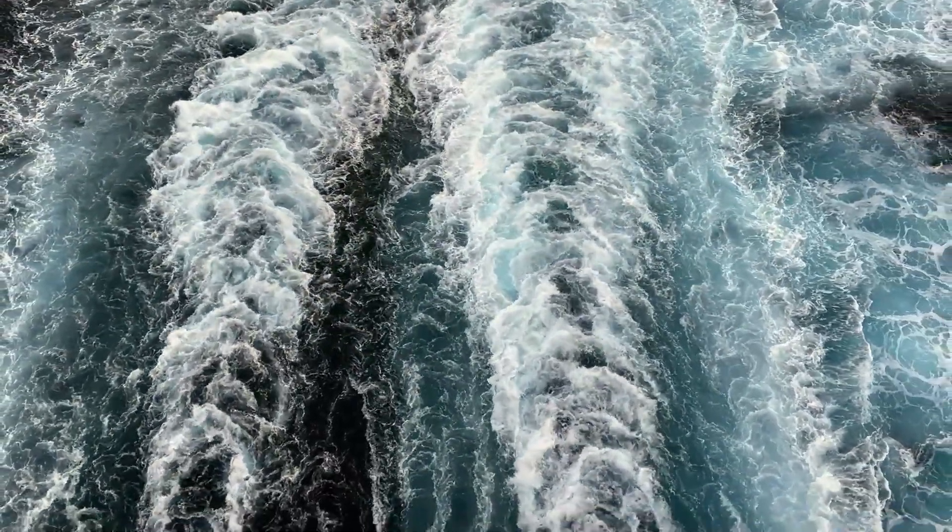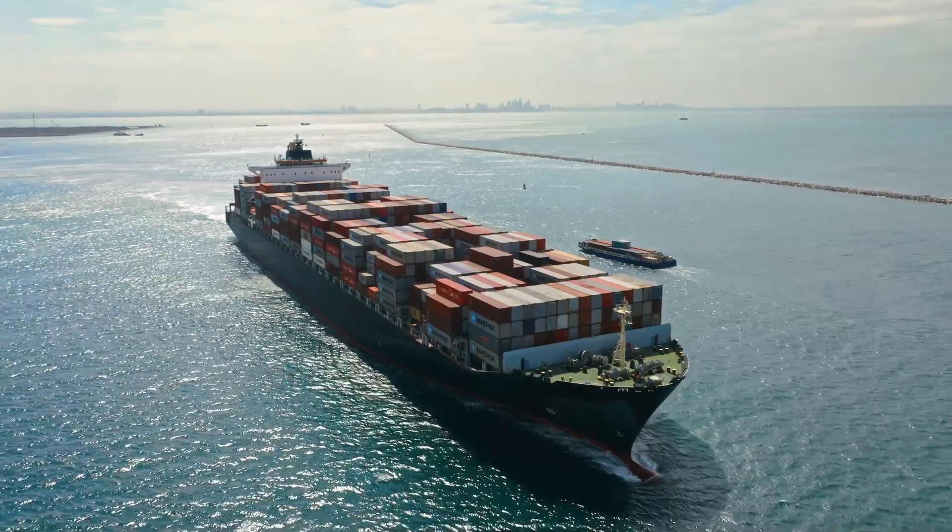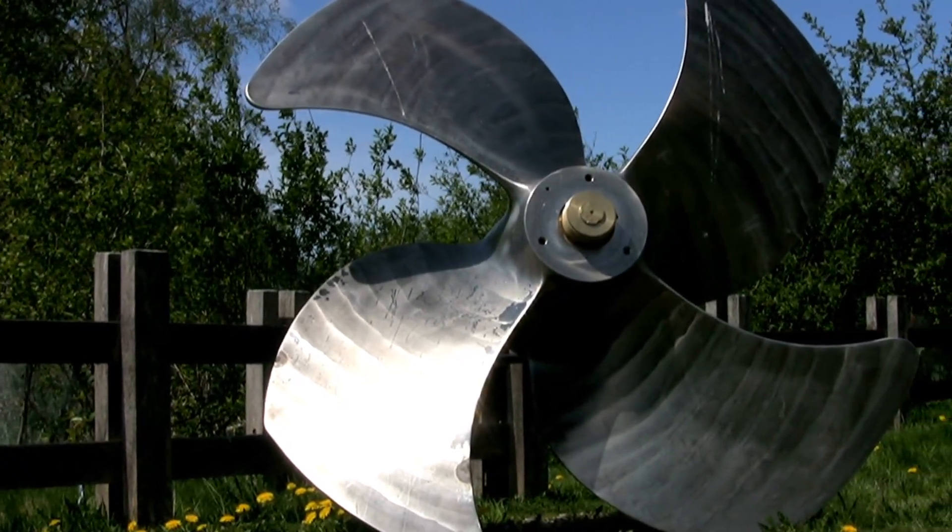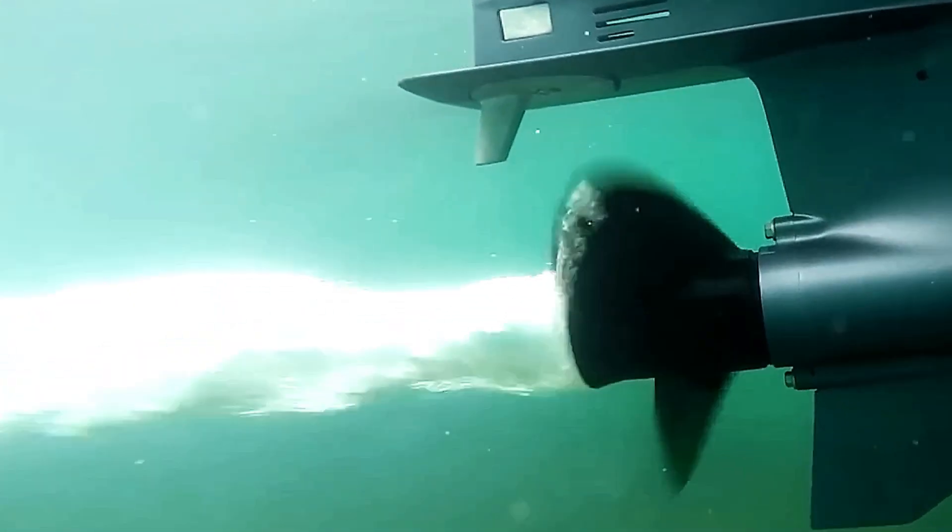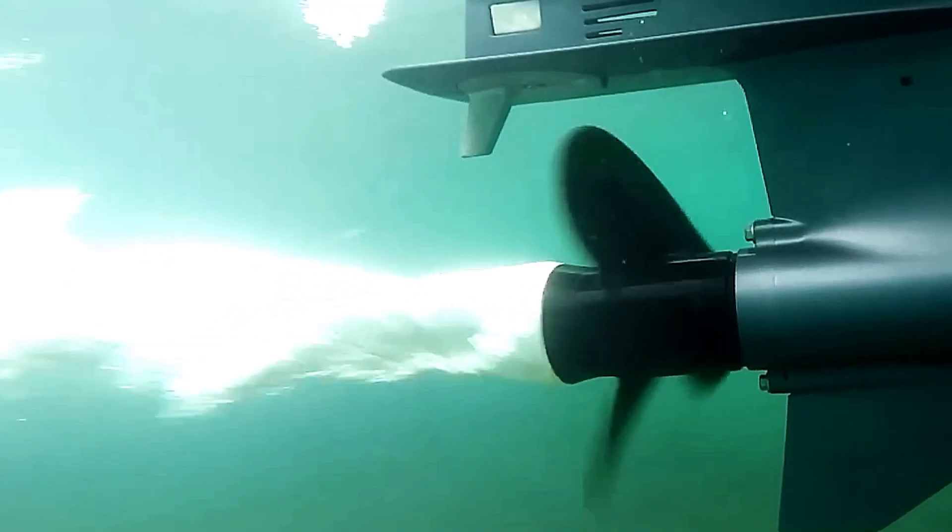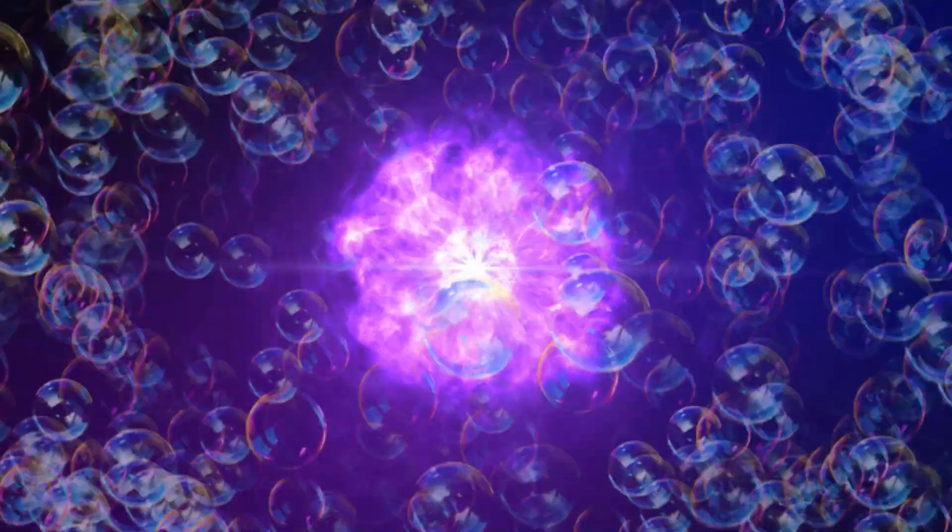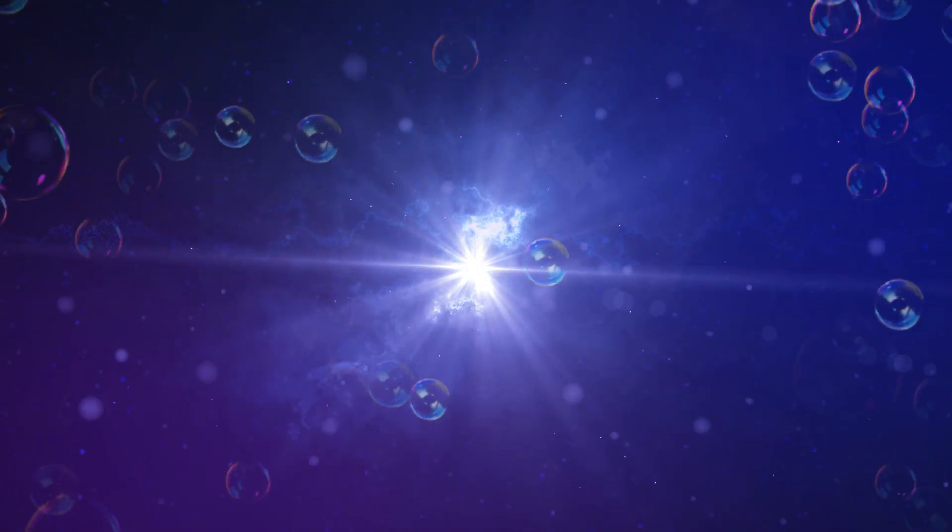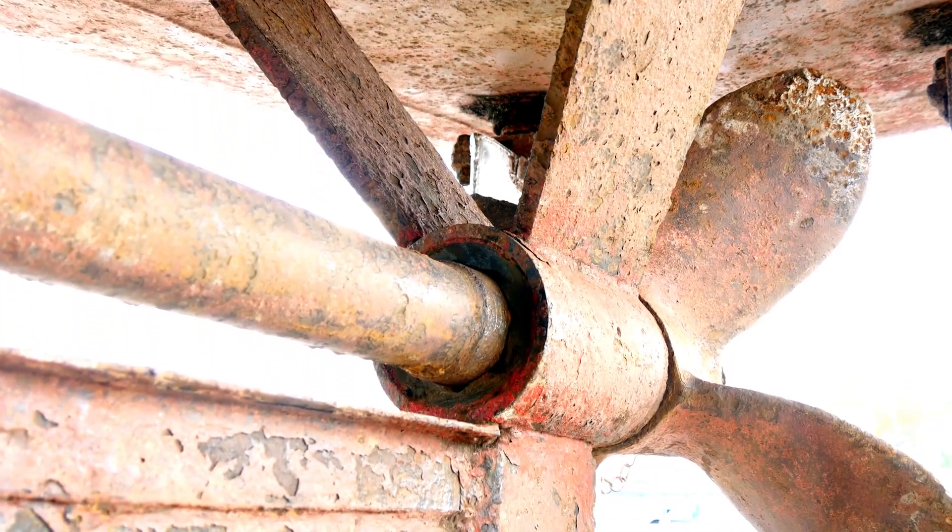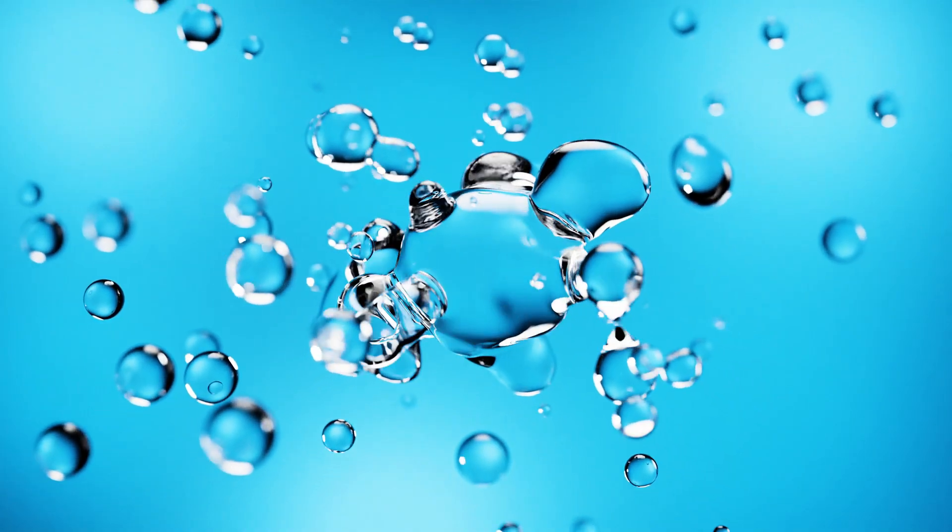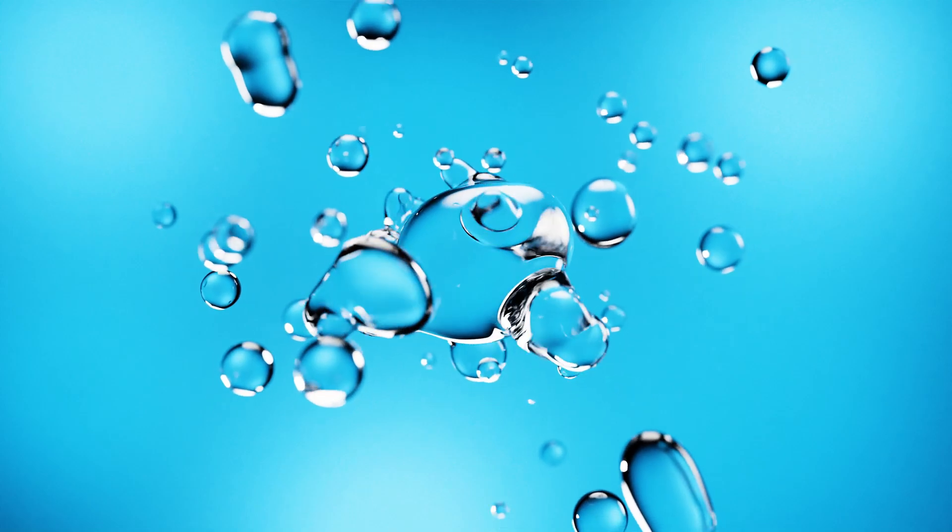Another real-world example that resembles sonoluminescence occurs in ship propellers. When a ship propeller moves through water at high speeds, it can create low-pressure areas that cause cavitation. Tiny bubbles form and then rapidly collapse. While these collapsing bubbles don't emit light, they release a tremendous amount of energy in the form of heat and sound. In fact, cavitation is powerful enough to damage metal propellers over time, a phenomenon similar to how the collapse of bubbles in sonoluminescence can generate extreme conditions.